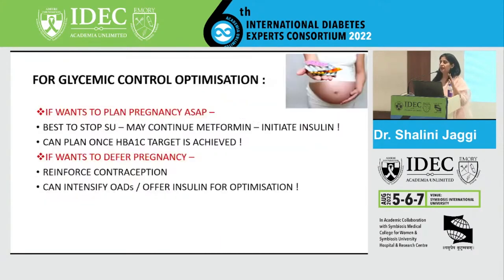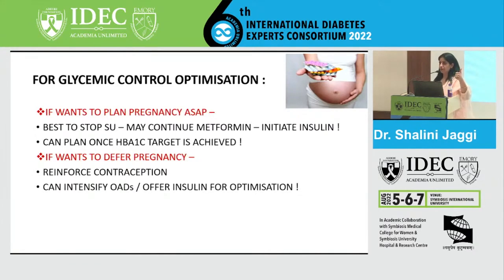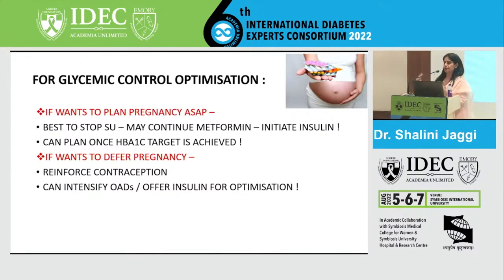Drug therapy preconception should focus on transitioning her to insulin as early as possible. For type 2 diabetes, a premixed insulin twice daily can be started initially; once pregnant, intensify to a basal-bolus regimen based on SMBG to keep glucose on target. If there is no urgency, you can intensify orals, but warn her that when pregnancy is planned, OADs must be stopped — except metformin, which may be continued up to 12 weeks in certain high-risk women.